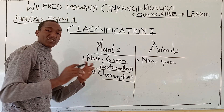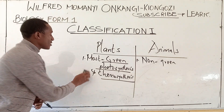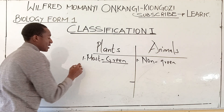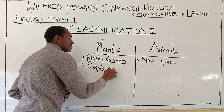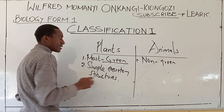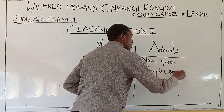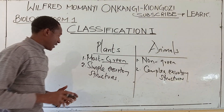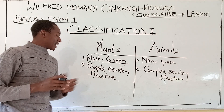Non-green plants will be discussed in much more detail in the last chapter. The second difference was about excretory structures: plants have simple excretory structures, while animals have complex excretory structures.